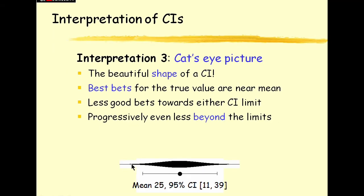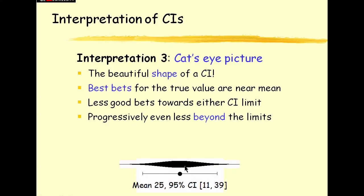Third interpretation, even more beautiful than this picture of a confidence interval, is the cat's eye. A cat's eye confidence interval which pictures the relative likelihood or relative plausibility of where the true value lies, where the population mean lies.